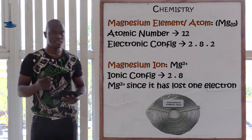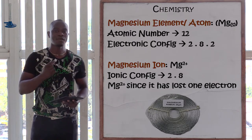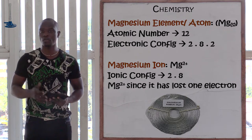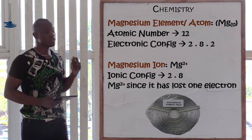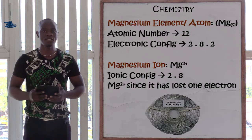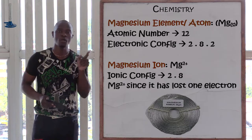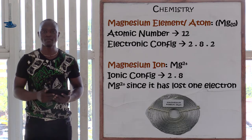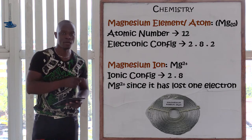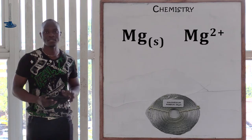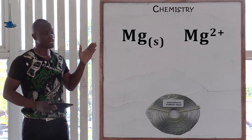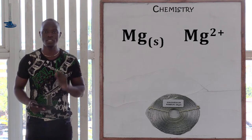Since magnesium has two electrons in the outermost energy level, magnesium is going to lose two electrons in order to become stable, and therefore becomes the magnesium ion. You write Mg with 2+ on top. Writing Mg 2+ represents that this is a magnesium ion and not a magnesium atom. The magnesium atom has the state symbol solid, and the magnesium ion has a charge of positive 2.